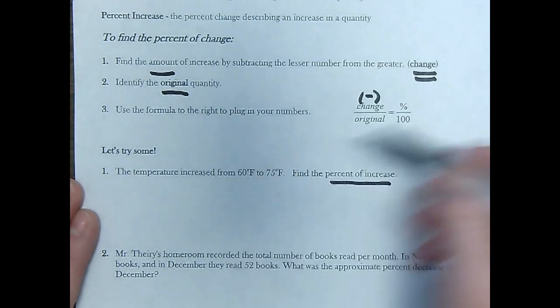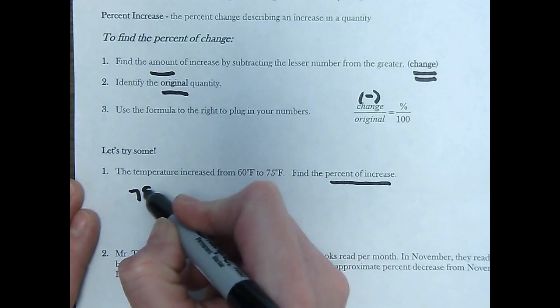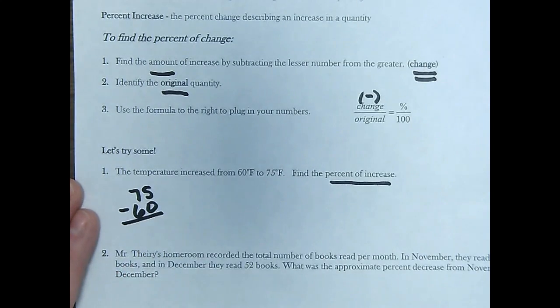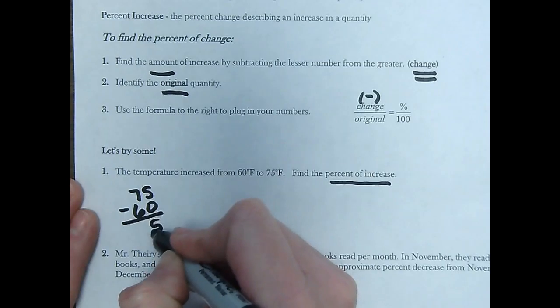So we are going to find the amount of change by subtracting. You always just subtract the bigger minus the smaller. So we're going to do 75 minus 60, which gives me 15.